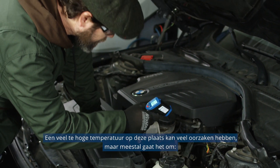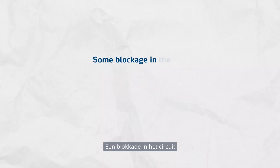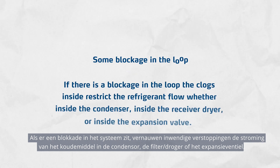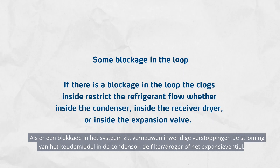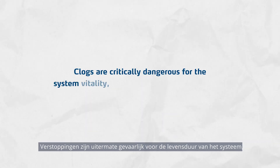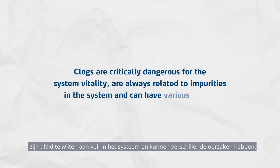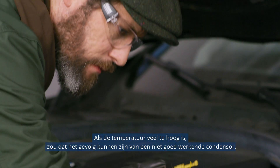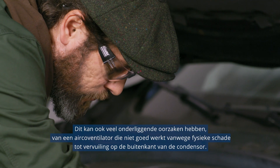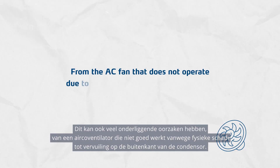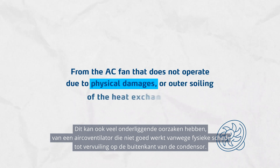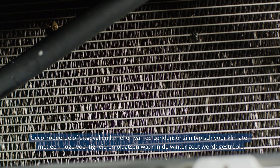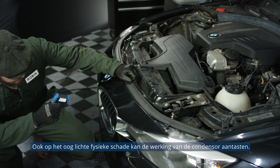A temperature that is way too high at this spot can mean many things, but here are the most common. Some blockage in the loop — if there is a blockage, the clogs inside restrict the refrigerant flow whether inside the condenser, inside the receiver dryer, or inside the expansion valve. Clogs are critically dangerous for the system's vitality, are always related to impurities in the system, and can have various origins. If the temperature is way too high, it could be due to improper operation of the condenser, which can have many potential root causes, from the AC fan not operating due to physical damages or outer soiling of the heat exchanger surface. Corroded and missing fins are typical for climates with a lot of moisture and where salt is spread during the winter. Seemingly light physical damages can reduce operation of the condenser.